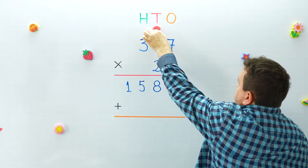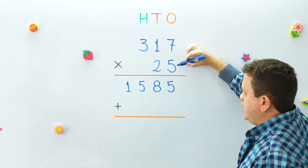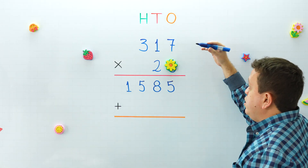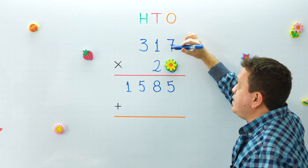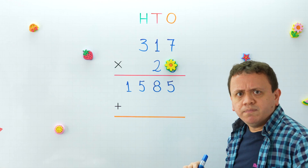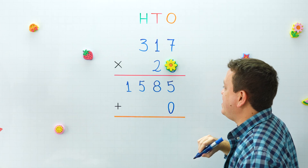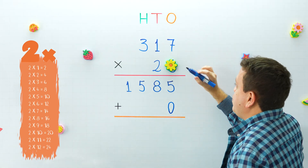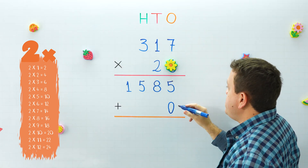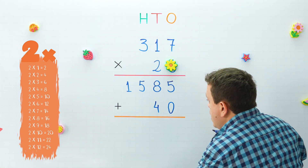Now we erase the digits we carried. For the second step we don't need the ones digit, so I'll put the flower again. In the second step we're going to multiply 317 by two tens — 317 times 20 — so we start a new line with a zero on the right. Now two times seven equals fourteen.